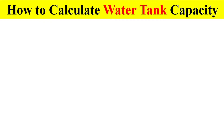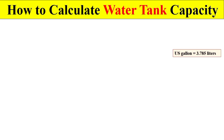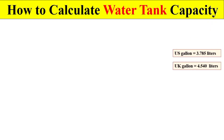In order to start calculating water tank capacity, first of all it is important to understand some basic concepts related to water tank capacity. Dear students, if you have a US gallon it contains 3.785 liters, and if you have a UK gallon it contains 4.540 liters.